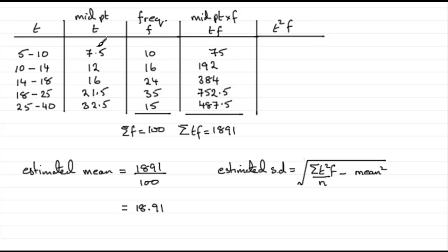So in other words, what we've got to do is take our midpoint, 7.5, square it and times it by the 10, and if you do that you're going to get 562.5. And then you've got to do 12 squared times 16 and so on. And if you do that, there they are.